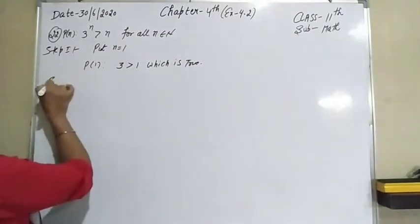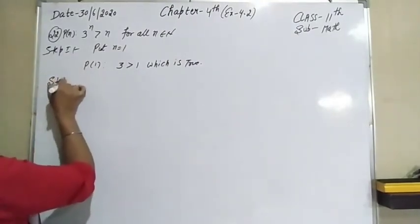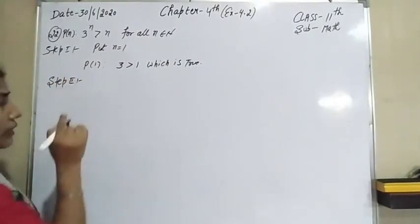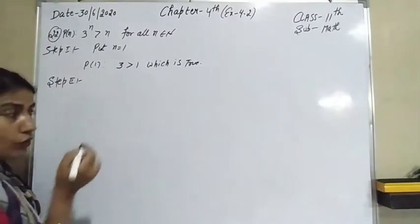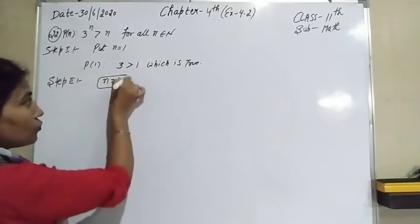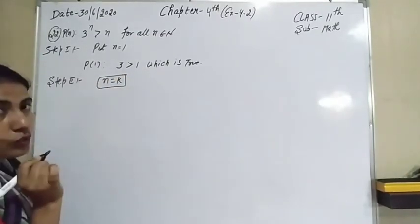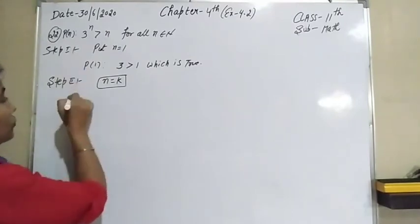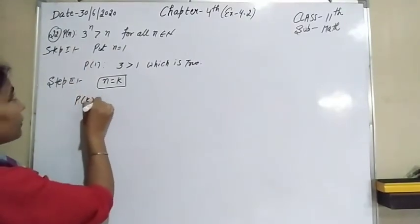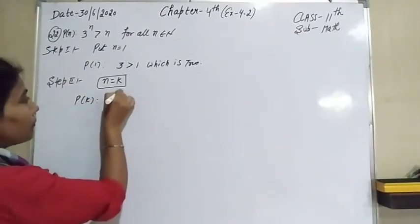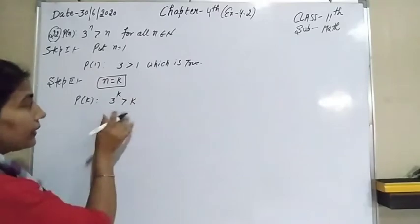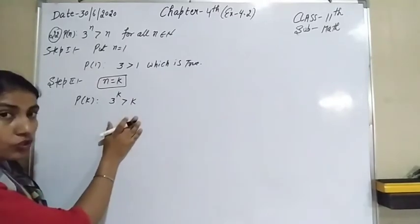In the second step, we assume that the result is true for n equal to k. So P(k) is the statement: 3 raised to the power k is greater than k. That is already assumed true.